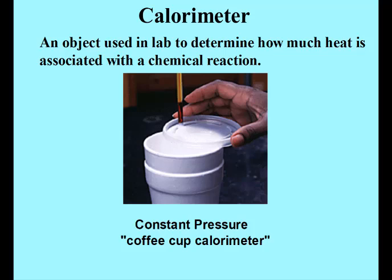Calorimetry uses a calorimeter. A calorimeter is an object used in lab to determine how much heat is associated with a chemical reaction. We often use a coffee cup calorimeter, which is constant pressure. Because the coffee cup is made of styrofoam, it absorbs very little heat from the reaction.